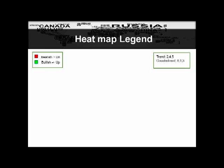Now let's break down our number system. Before we go into the website, I want to explain the heat map legend. We have a number system that goes from zero to five representing opportunities. Red always means bearish — you're betting on it going down. You can bet on things going down as much as you can bet on things going up. Green means a bullish opportunity — you're looking to go long and bet on it going up.